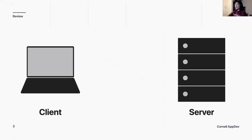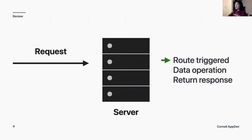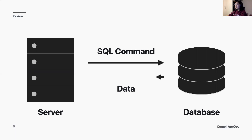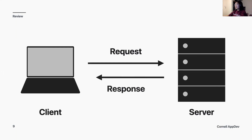As a review, let's remember what client-server communication looks like. When the client wants to retrieve or manipulate data, it will create a request to the server. The server will then process the request, find out which route is triggered, perform corresponding data operations, and then return some sort of response. In data operations, that means manipulating data within a database. The server will run some SQL commands, and then the database will return data that's been updated or deleted. Once the server is done processing the data, it will return a response to the client.